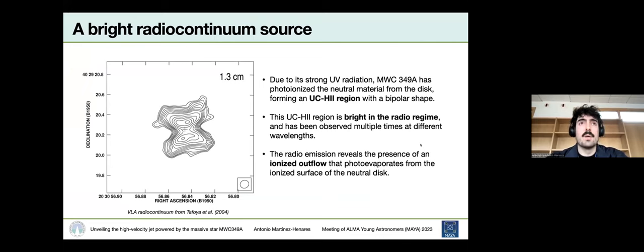This star is very bright in the radio domain, so it's been observed several times and at several wavelengths. The shape of the radio continuum, what we see here, is an ultra-compact H2 region that has been originated from the photoevaporation of the neutral disk due to the ultraviolet radiation from the central star. From the shape of the radio continuum and the flux density obtained at different wavelengths that yield a spectral index of around 0.6, we conclude that this star is hosting an ionized outflow because of the photoevaporation of this disk.